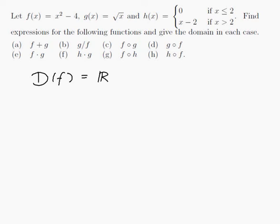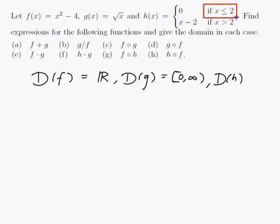The domain of g: g is the square root of x, so I can only put non-negative numbers in there. I can't take the square root of a negative number for a real-valued function, so the domain is from 0 to infinity, including 0. And the domain of h: h is defined if x is less than or equal to 2, and also if x is greater than 2, so h is defined everywhere as well.